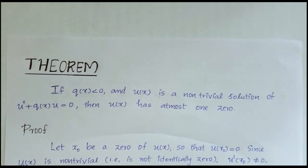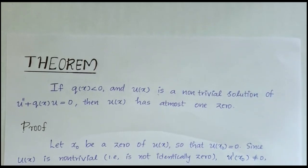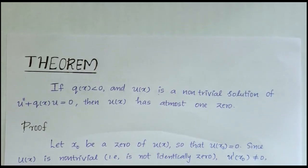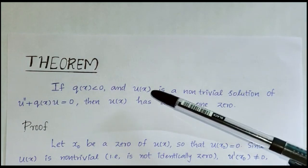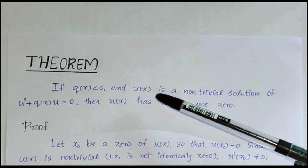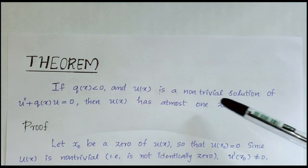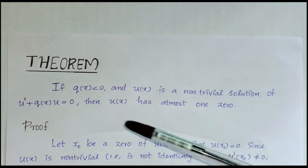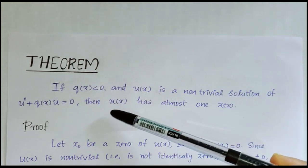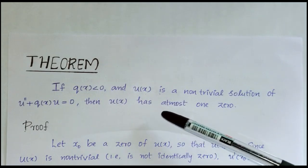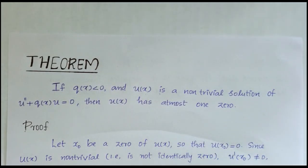Today, we are going to discuss a small theorem from the section Oscillation Theory and Boundary Value Problems. We will go to the statement of the theorem: if q(x) < 0 and u(x) is a non-trivial solution of u'' + q(x)u = 0, then u(x) has at most one zero.